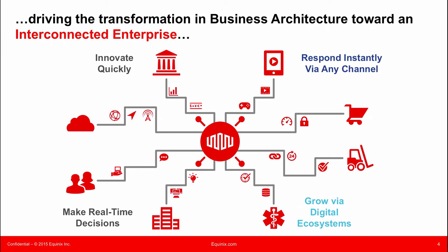The idea of the interconnection-oriented architecture is bringing everything together. Rather than having a workflow that goes one place to the next sequentially, it's everybody collaborating in a single kind of matrix. Everybody is connected all of the time in a high-speed, low-latency, and secure environment where you can innovate quickly with partners, make real-time decisions, respond to the marketplace efficiently, and grow an ecosystem of people working together — where the whole is greater than the sum of the parts.